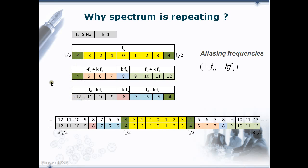Previously, we saw that any frequency component is represented in the frequency domain with positive and negative sides with half the amplitudes. So here we can represent the 4 Hz and minus 4 Hz signal without any problem, and it is the limit because F0 of 5 Hz, 6 Hz and above are already aliased. In the same way, F0 of minus 5 Hz and minus 6 Hz are aliased.